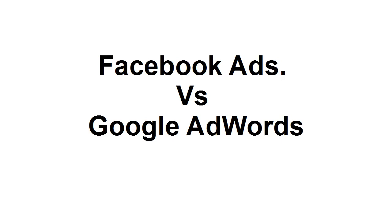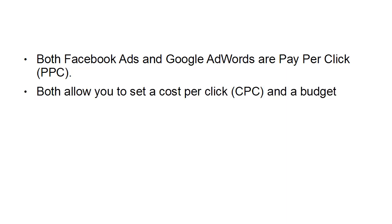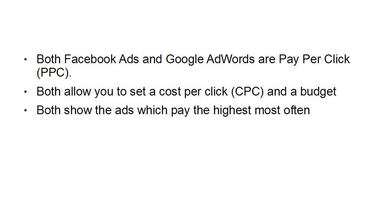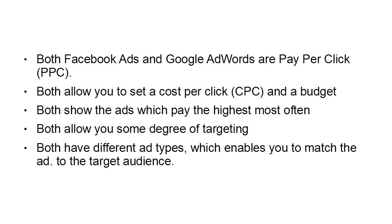What's the difference between advertising via Facebook ads and advertising via Google AdWords? There are certain similarities. First of all, both Facebook ads and Google AdWords are pay-per-click, or PPC. Both allow you to set a cost-per-click, otherwise known as a CPC, and a budget. Both will show ads which pay the highest most often. Both allow you some degree of targeting, and both have different ad types which enable you to match the ad to the target audience.